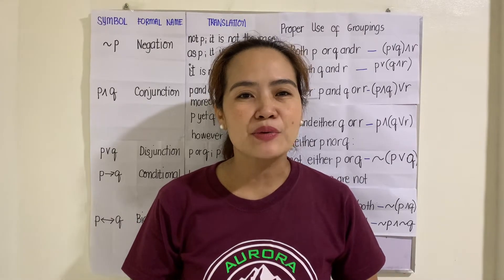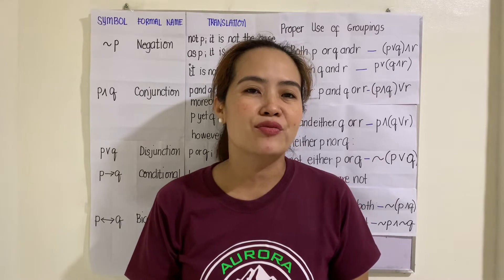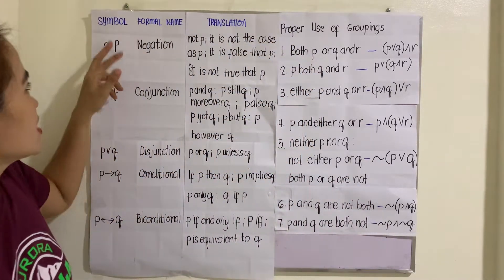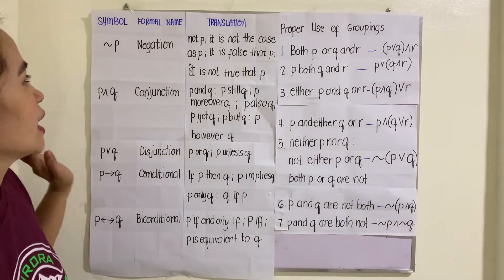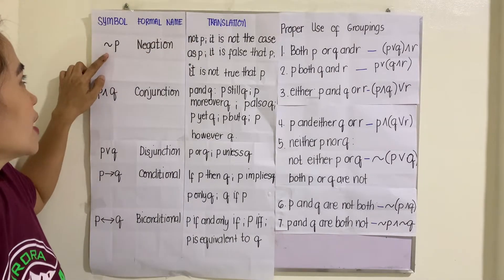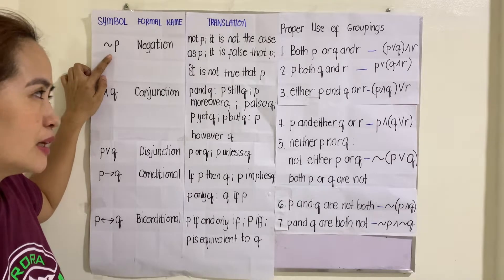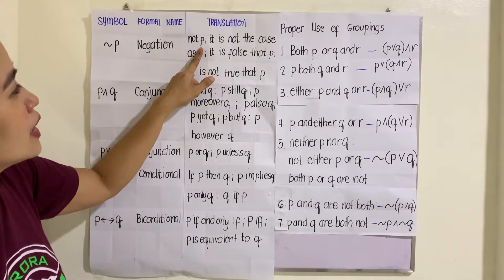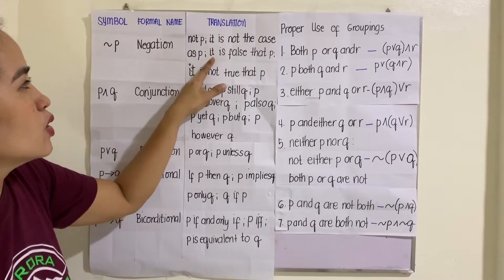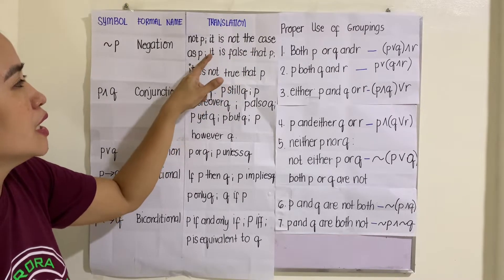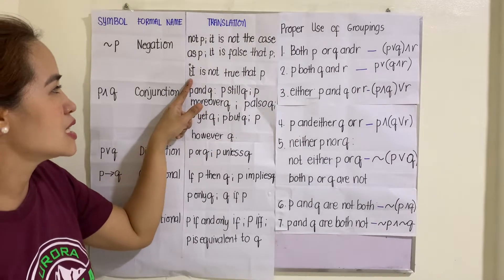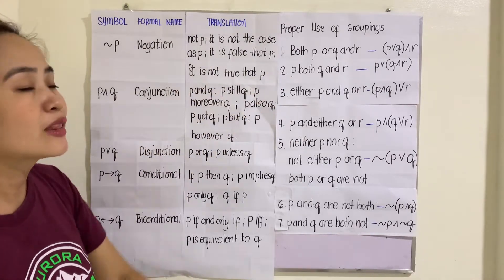Let us familiarize ourselves first with the different logical operators. We have here the symbol, the formal name, and translation. The first one is negation, read as 'not P.' It can also be translated as 'it is not the case that P,' 'it is false that P,' or 'it is not true that P.'